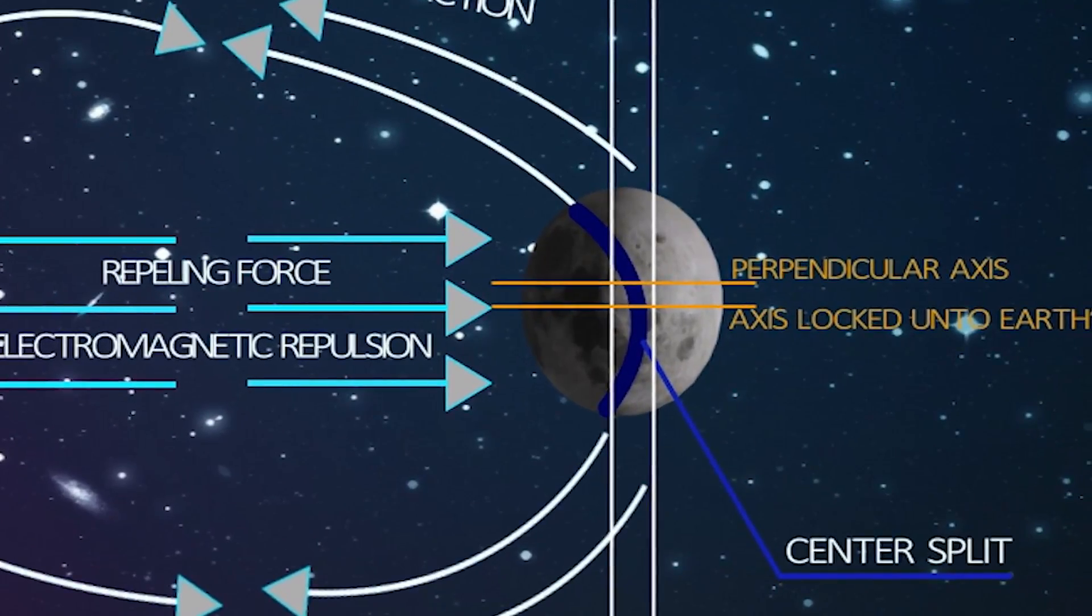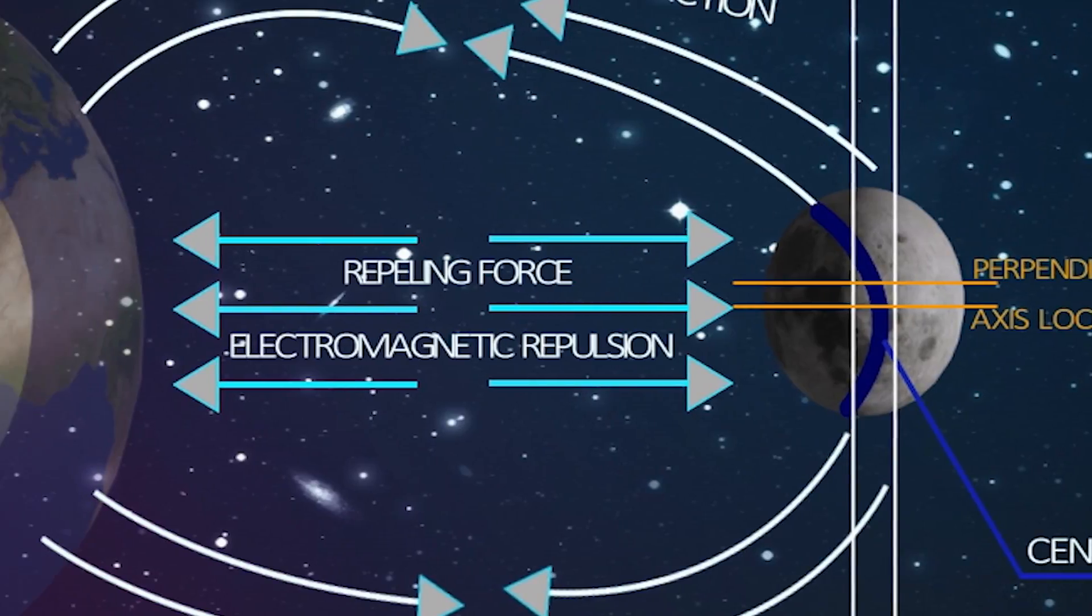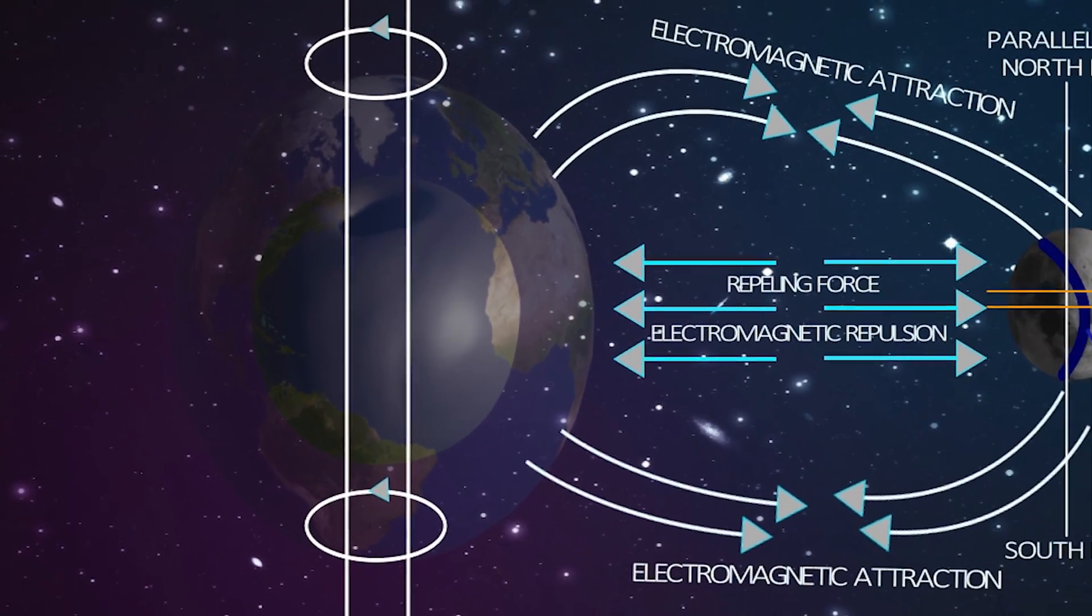A second axis, perpendicular to the first axis, pointing to Earth and locking it onto Earth's central structure, creating a two-way gravitational electromagnetic grip.